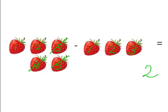Therefore, five minus three equals two. Wonderfully done and keep up the great math work.